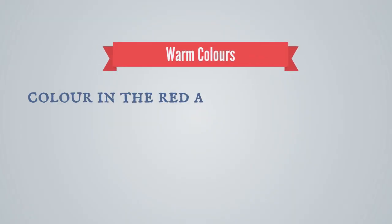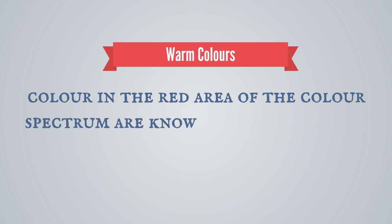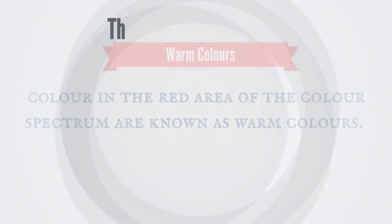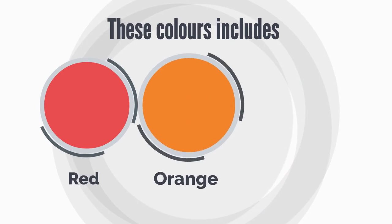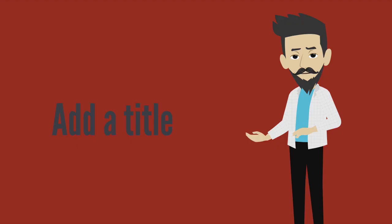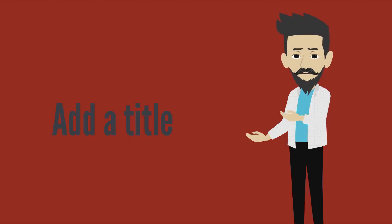Warm colors. Colors in the red area of the color spectrum are known as warm colors. These colors include red, orange and yellow. These colors are radiant and cozy. They tend to make space.